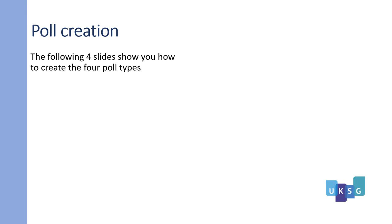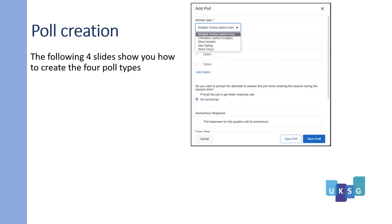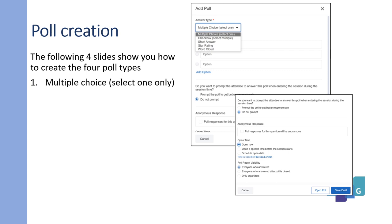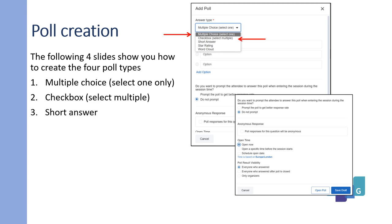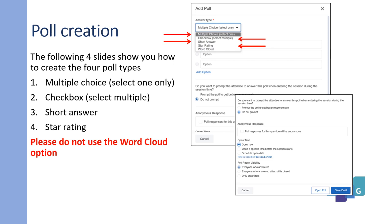The following four slides show you how to create the four poll types. The first one is multiple choice, where the user can only select one option. The second is checkbox, where they can select multiple items. The third is a short answer. And the fourth is star rating. Please do not use the word cloud option.